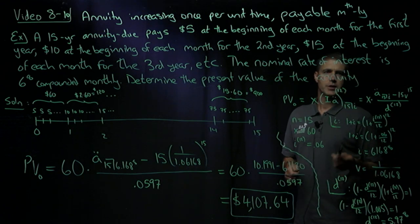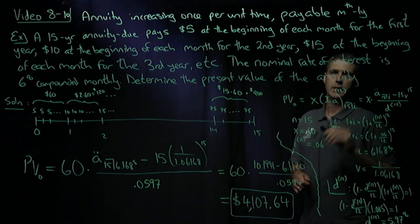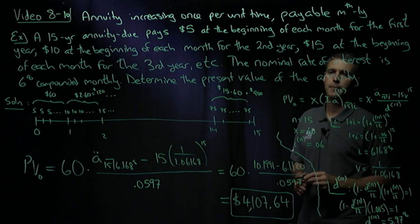So looking at the formula, it's clear that I need to know the value of X. I need to know the annual effective interest rate and the nominal discount rate compounded monthly.